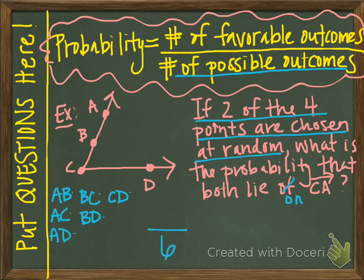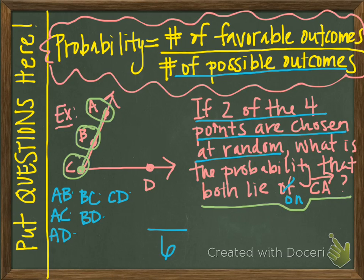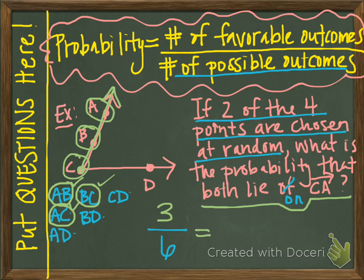Now we look at the number of favorable outcomes — what we're trying to find. The question asks: what is the probability that both points lie on ray CA? The points on ray CA are A, B, and C, since ray CA starts at C, continues toward A, and keeps going. Looking at our six possibilities, the ones where both points lie on that ray are: A and B, A and C, and B and C — not A and D, not B and D, and not C and D. That's three out of six.